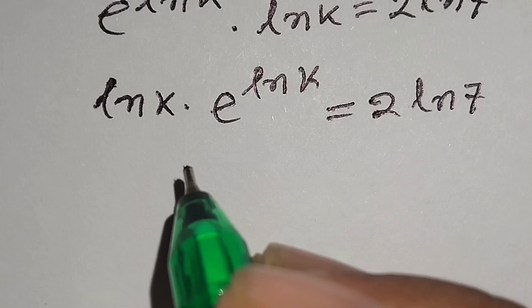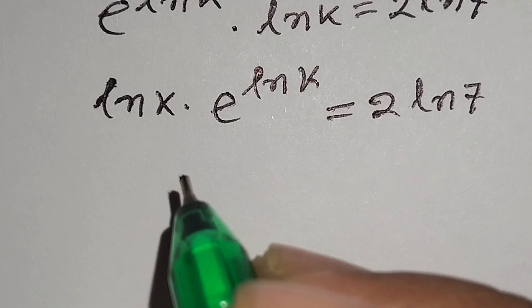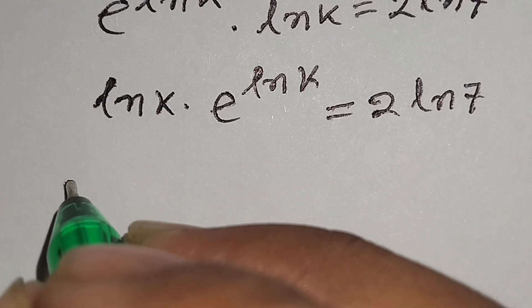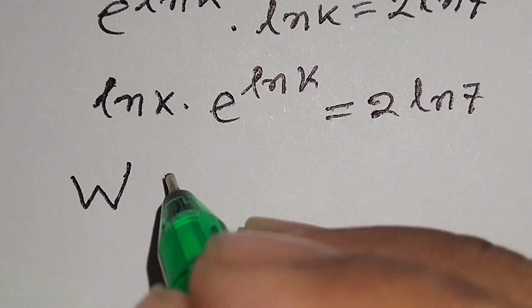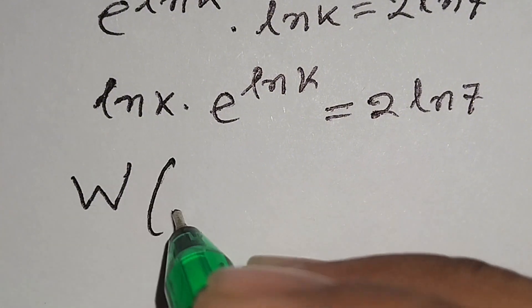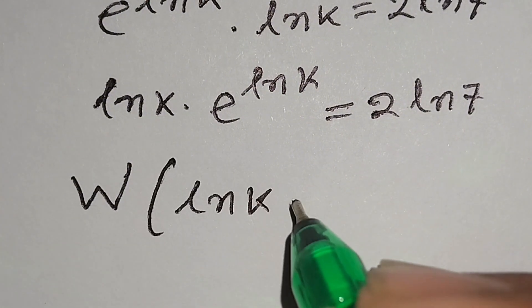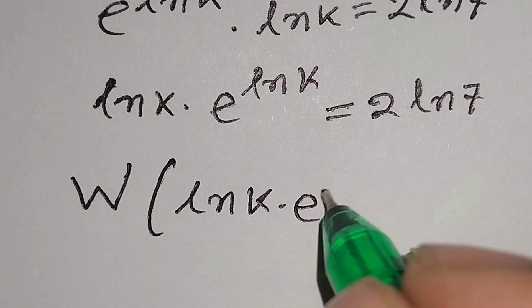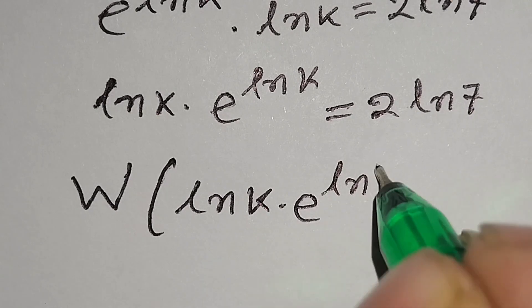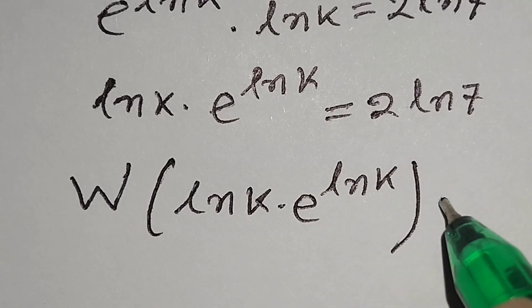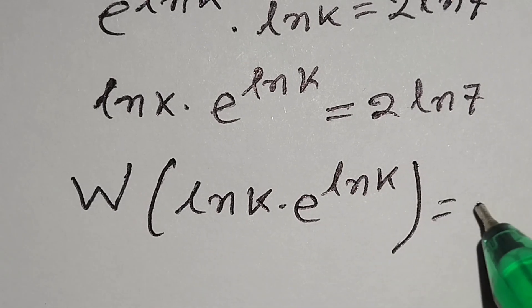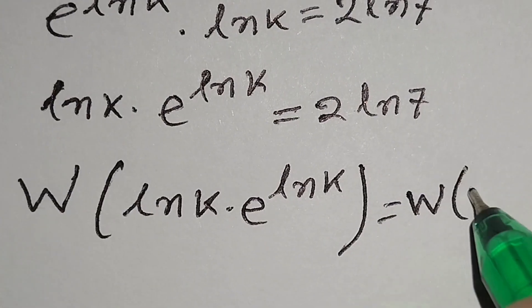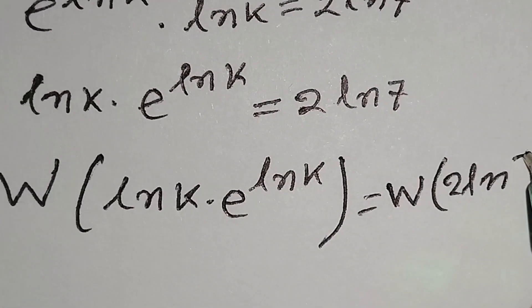Now we will take the Lambert W function on both sides. We have the form: ln k times e to the power ln k equals 2 times ln 7. Applying the Lambert W function gives us: ln k equals W of 2 times ln 7.